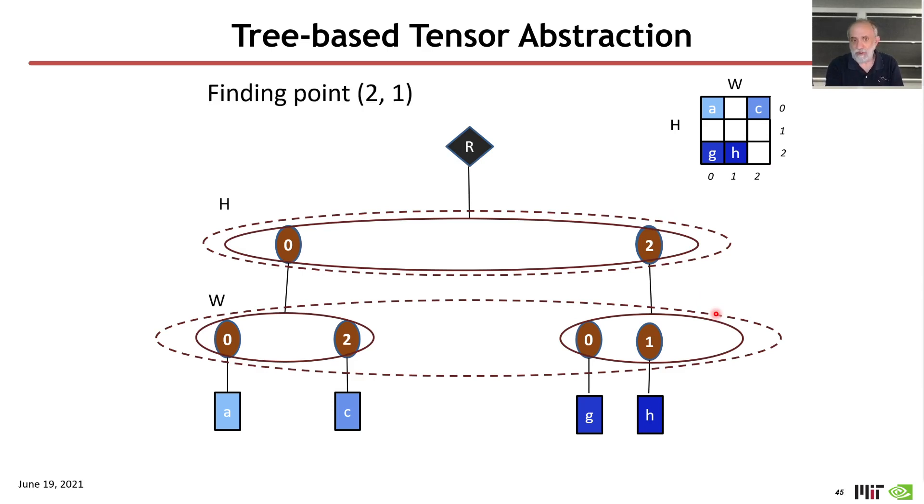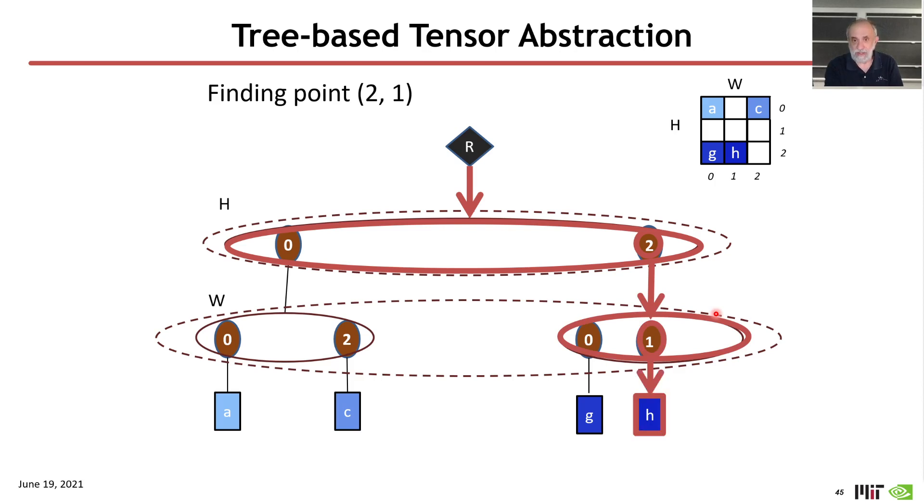Finding point (2,1) in a sparse tensor works exactly as it did before. I start at the root. I go to the fiber in the top rank of the fiber tree. I then look for the coordinate 2. Coordinate 2 has a reference to a fiber in the next rank. I now can look for the point 1. Point 1 has a reference to its value, which is H, and I can find that value.